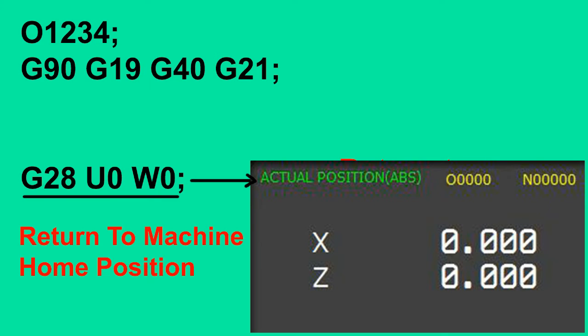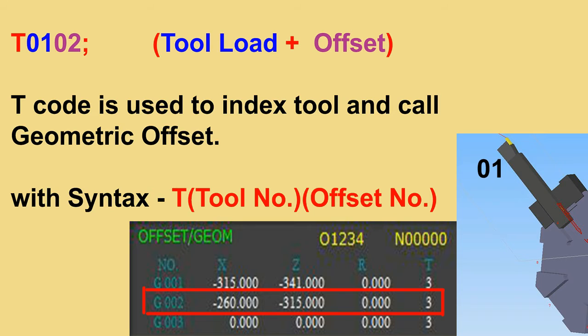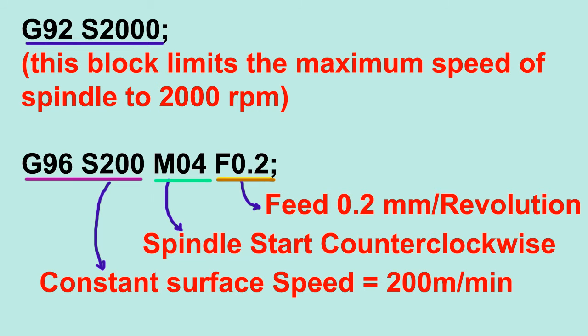In the next step of tool load, we index our tool and call the geometric offset — for example, T0102, which will index tool number 01 and call geometric offset 02. In step 3 we turn our spindle on, give its direction — that is counterclockwise or clockwise — and give its maximum RPM at which the spindle can rotate.